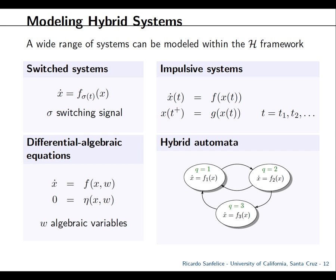There are other classes of related systems. A switched system has a family of vector fields chosen by a switching signal — this is essentially a discontinuous right-hand side problem where discontinuities occur based on an exogenous switching signal. The switching signal could belong to a family of dwell-time switching, with some minimum time between switches, or average dwell time, allowing a bounded number of switches per window.